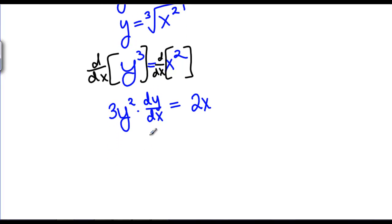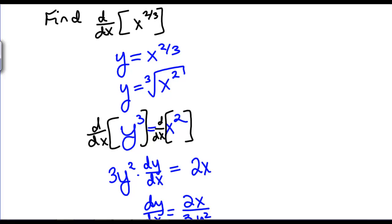Now we want to solve for dY/dX. dY/dX is 2X divided by 3Y squared. Okay, that's great, but since our original equation didn't have any Y's in it, it wasn't implicit, we want to go back to just X's.